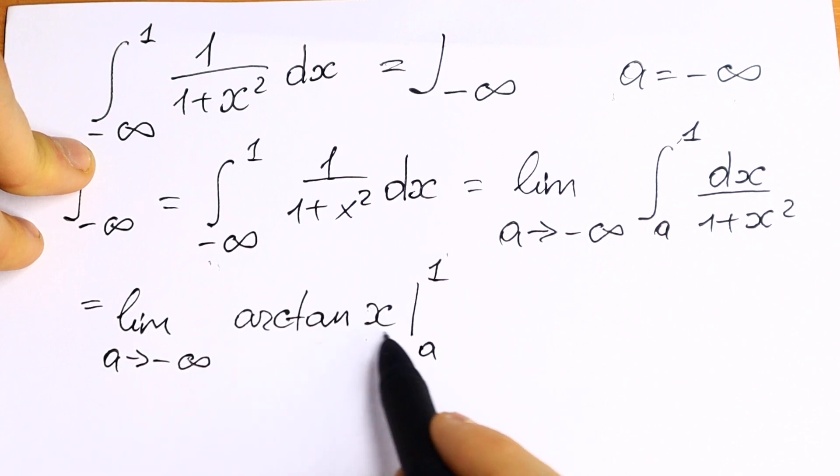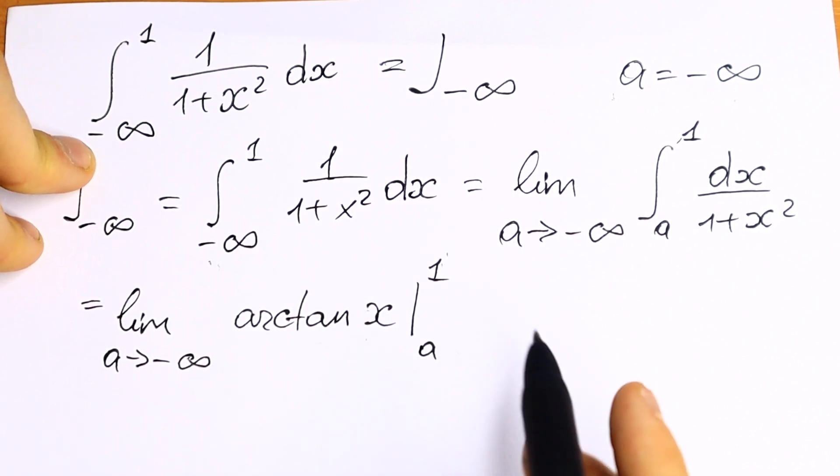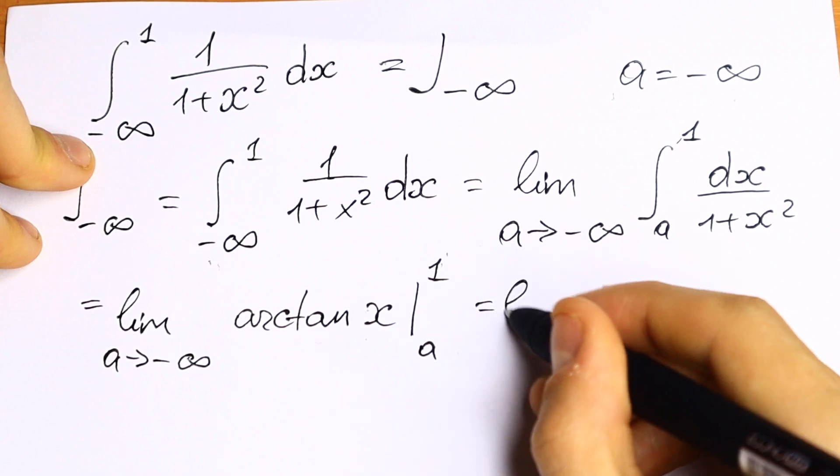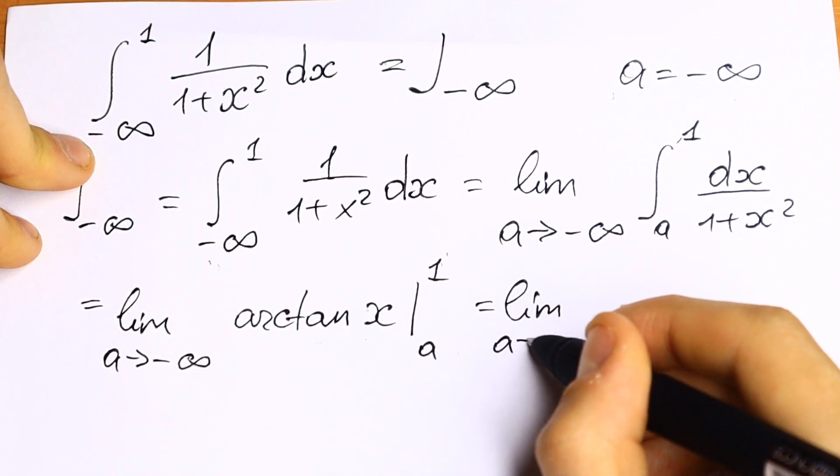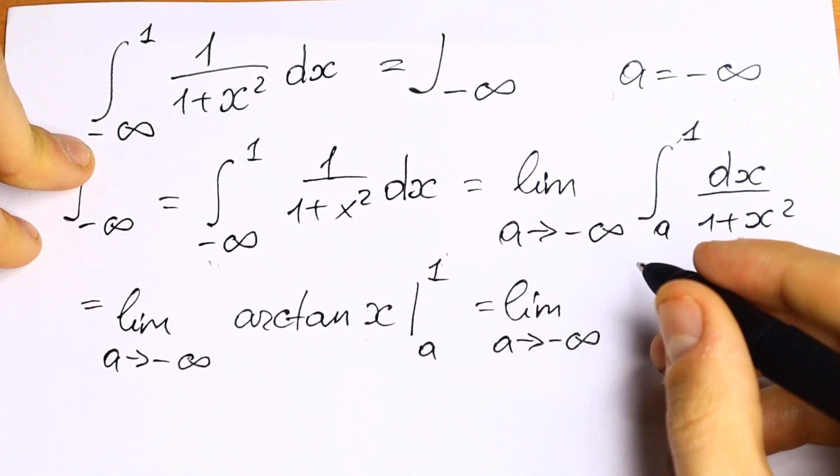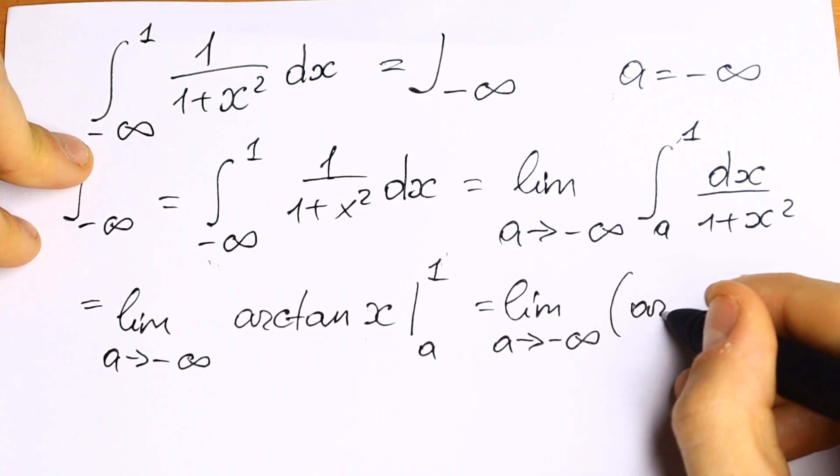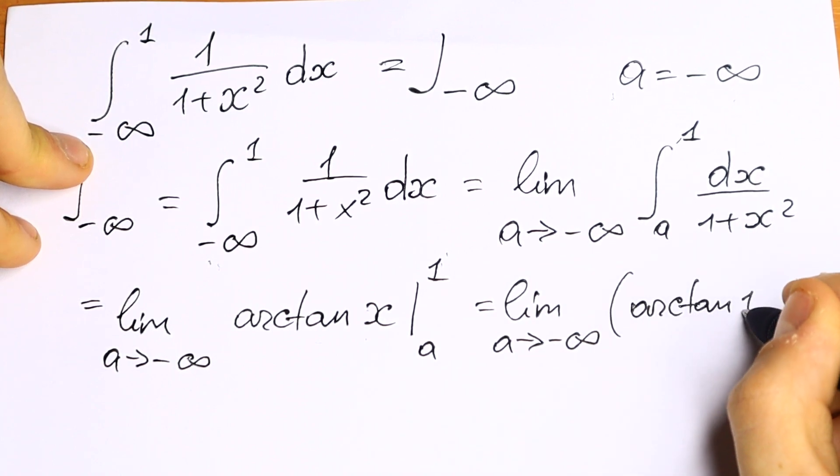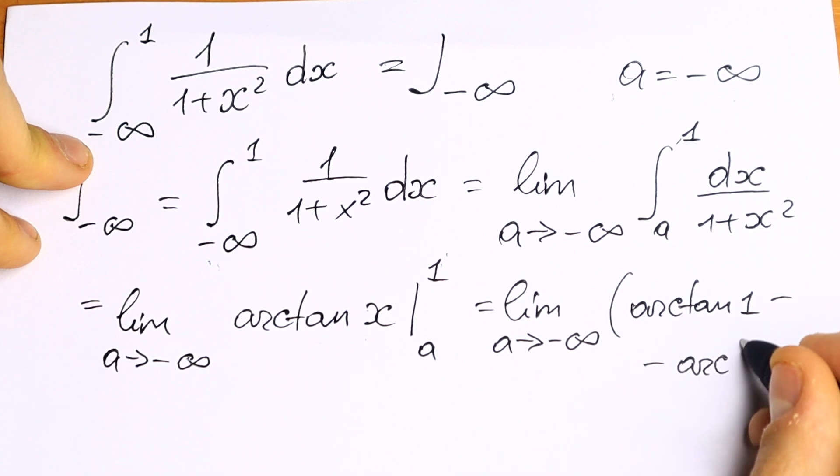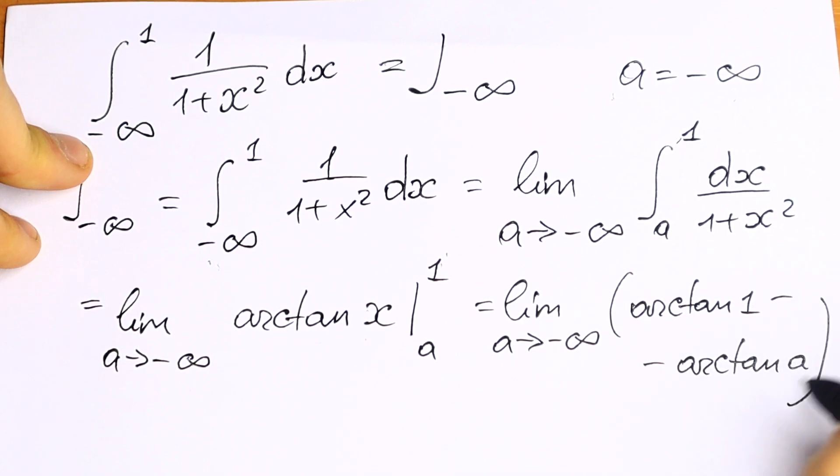And we need to put these measures, firstly 1 and secondly a. What we'll have? That this limit as a approaches to minus infinity will be equal to arctangent of 1 minus arctangent a.